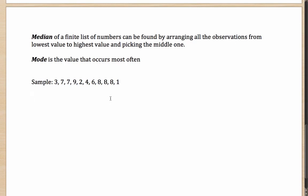Let me arrange this sample in increasing order: 1, 2, 3, 4, 6, 7, 7, 8, 8, 8, 9. Let me confirm how many values there are — counting gives 11 values. This is the correct arrangement.